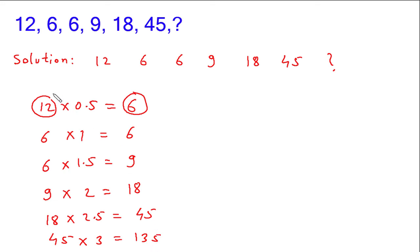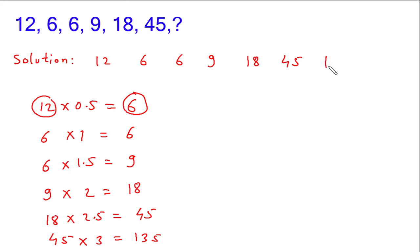So the sequence is 12, 6, 6, 9, 18, 45, and then this will be 135. So the correct answer is 135.